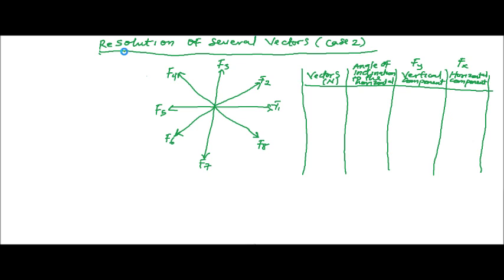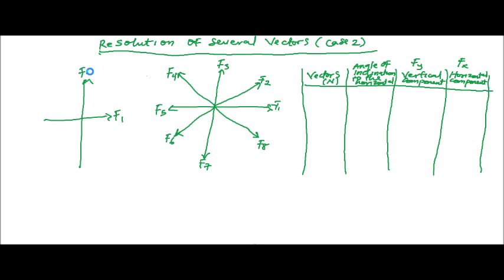F1, F2, F5, and F7 can be represented in this form. Don't forget there's an arrow showing the direction — F1, F3, F5, and F7.